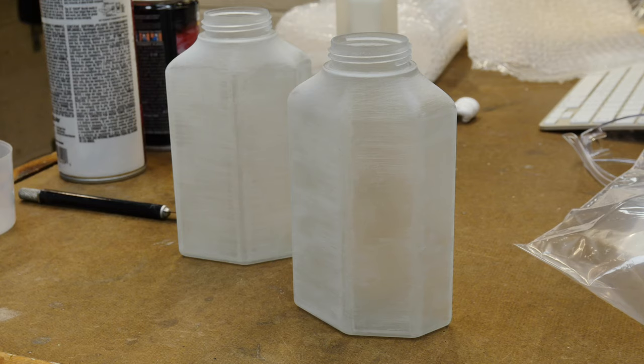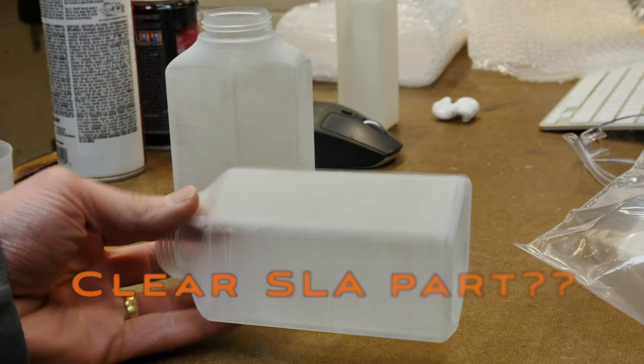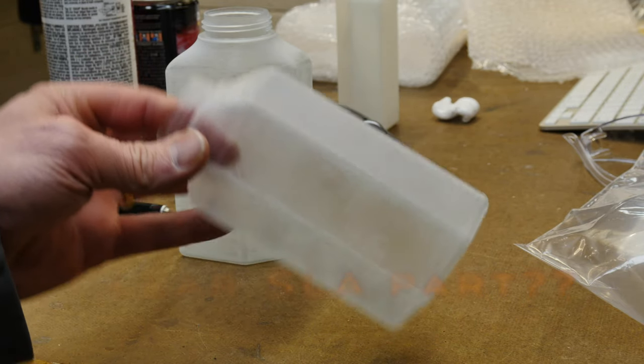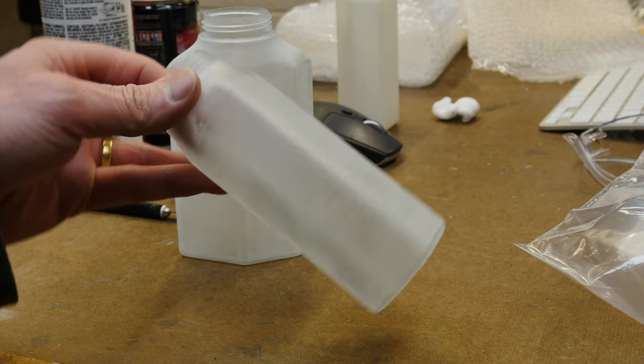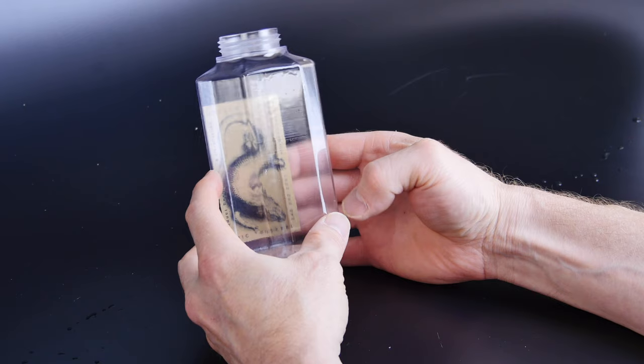This is a 3D printed prototype of a bottle that I designed. It's an SLA part, one millimeter thick, and this is what you get from a major North American service bureau. It's translucent at best. I'm gonna show you how to make it transparent so that you can read through it.